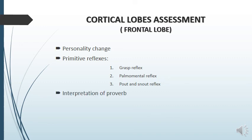Then we will check for interpretation of proverbs — a patient with a frontal lobe lesion will not be able to interpret a proverb properly; rather, he will give concrete explanations. Then we will look for loss of smell. Then we will check for gait apraxia — there will be marked unsteadiness in walking, with the feet behaving as if glued to the floor, causing a strange shuffling gait.